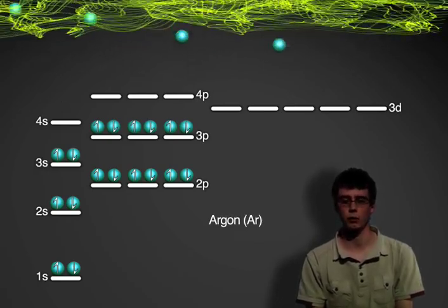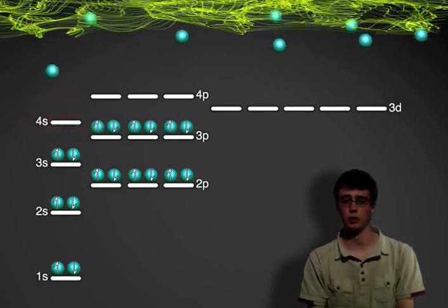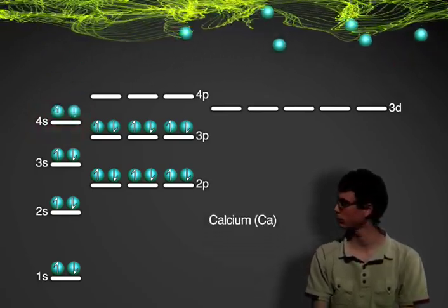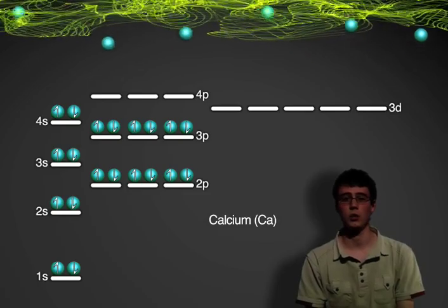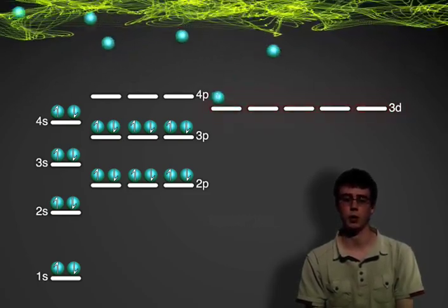As we can see in the diagram, 4s is the next energy level that needs to be filled. Calcium is doing this for us now. Once this has been filled, the 3d energy level can start to be occupied by the electrons.